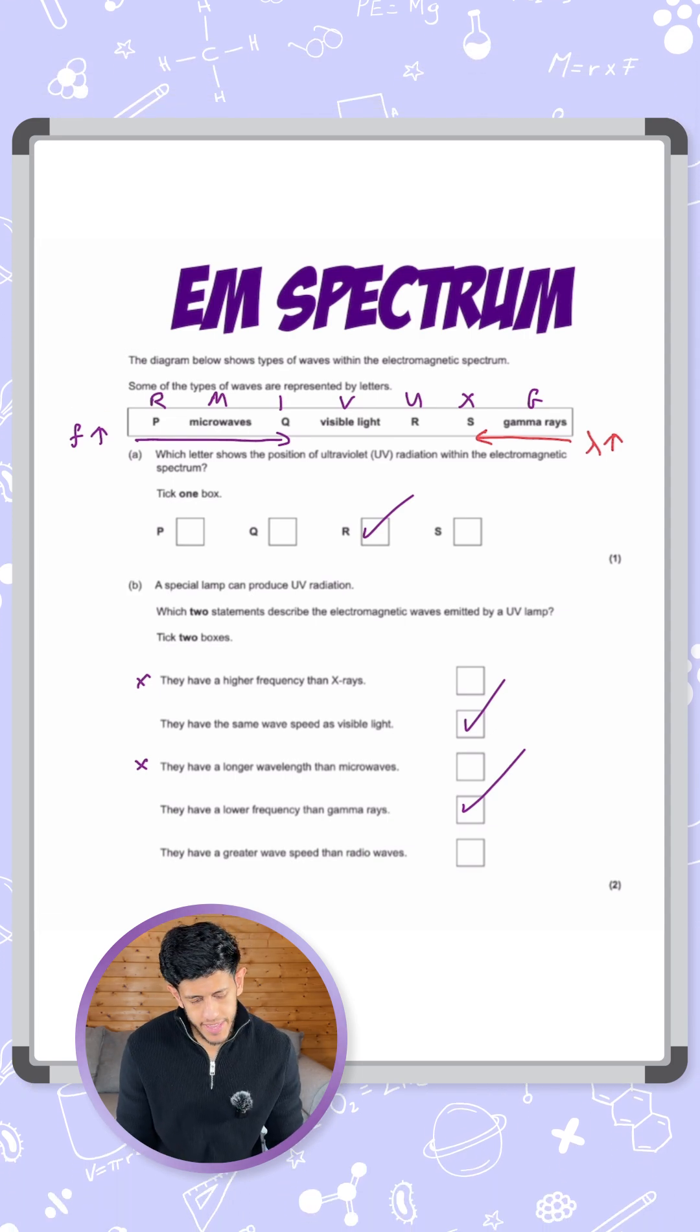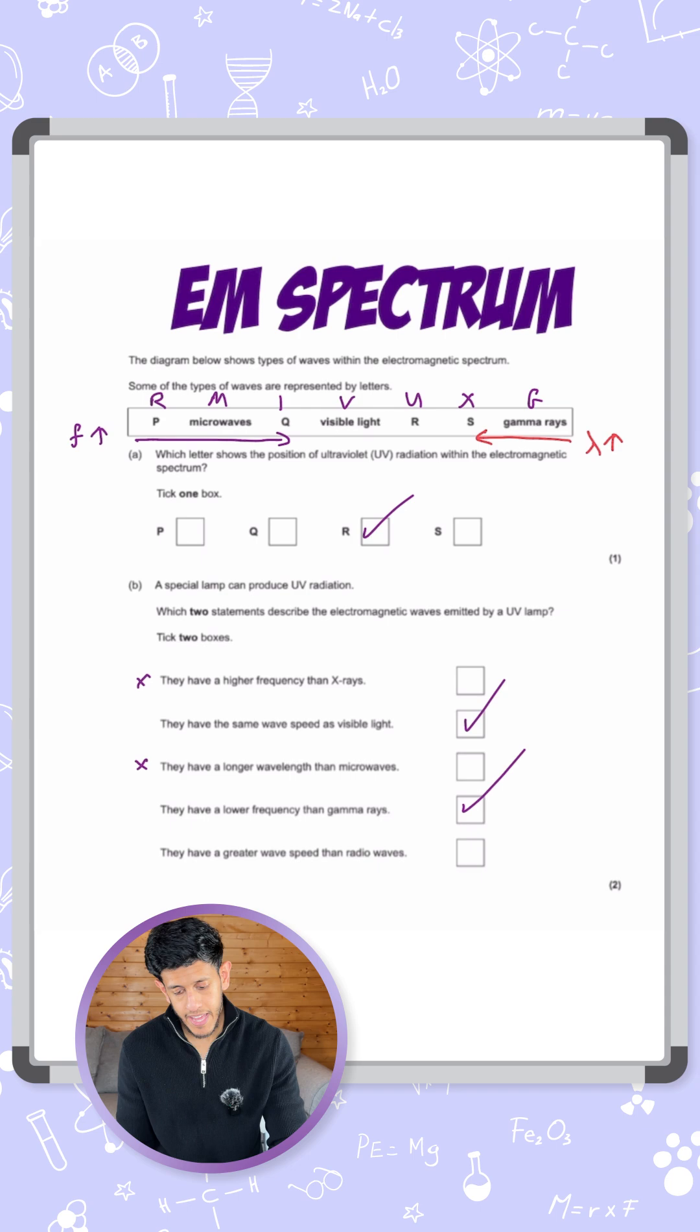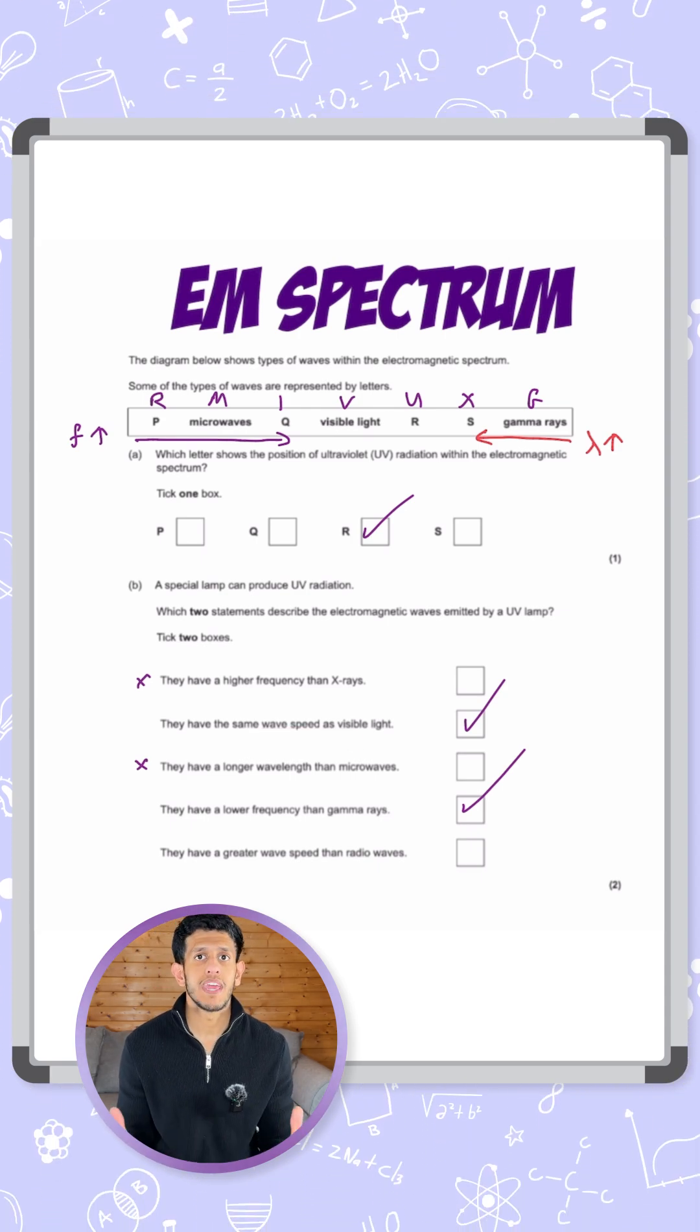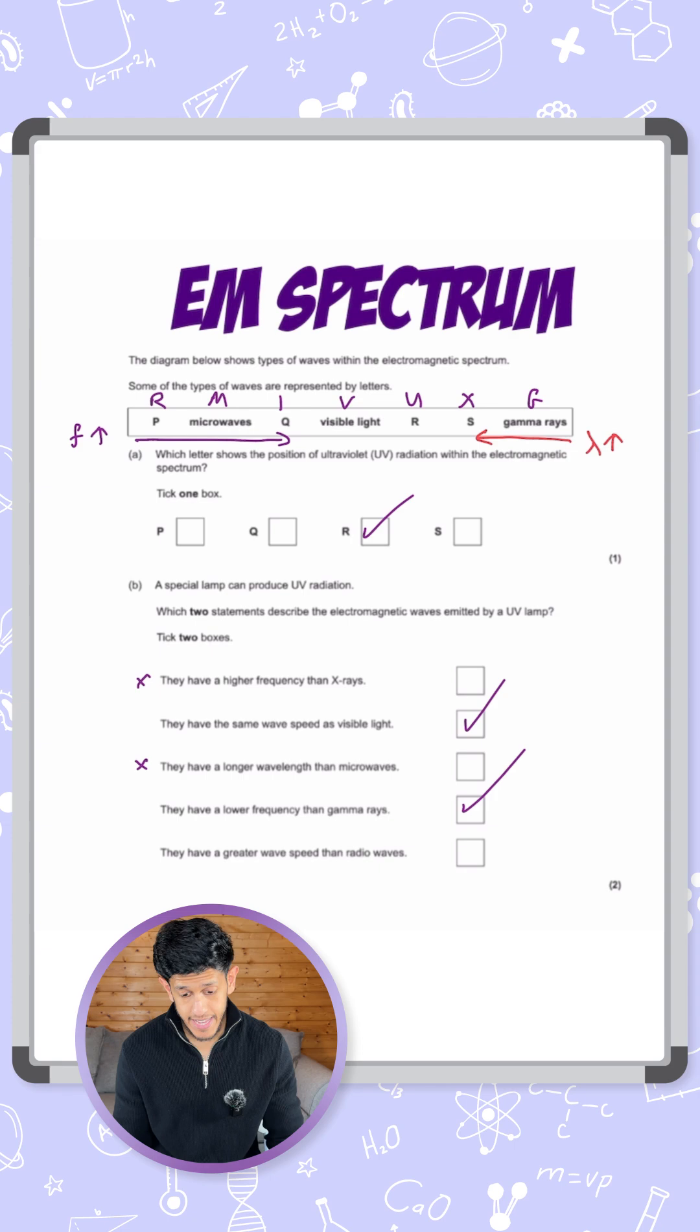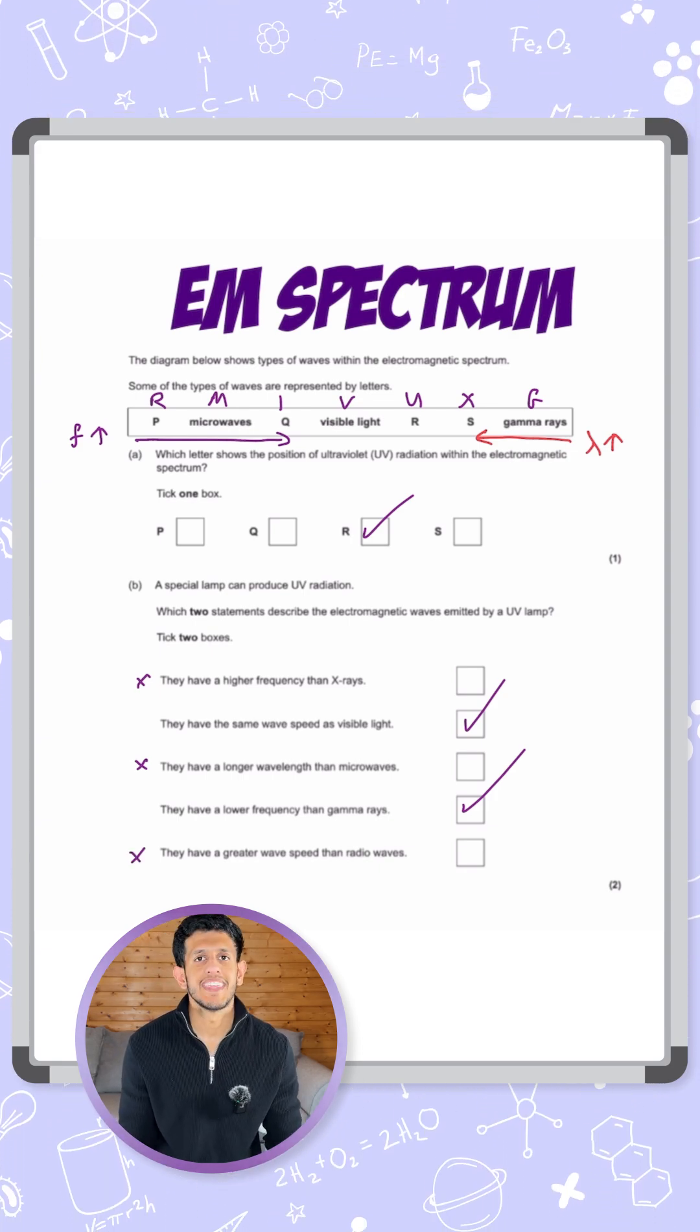And lastly, just to make sure we're correct, they have a greater wave speed than radio waves. Earlier we've ticked that they have the same wave speed as visible light, and I did say that all EM waves have the same speed. So in this case this can't be true either. Therefore we've established our two correct answers, and there we have it.